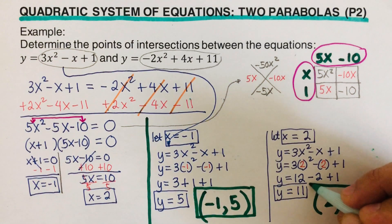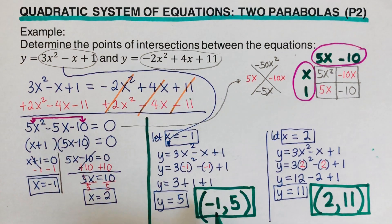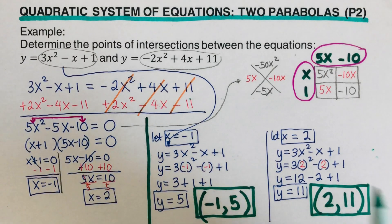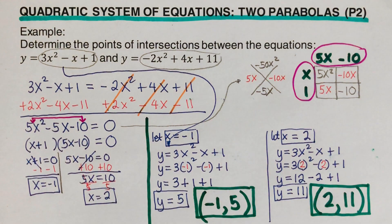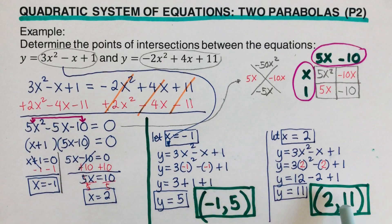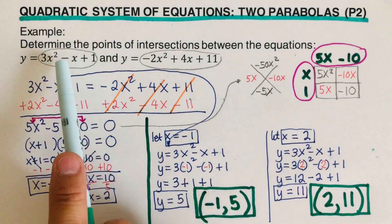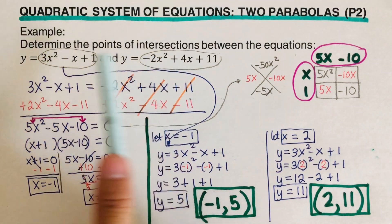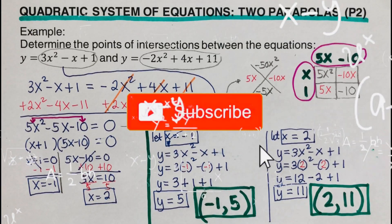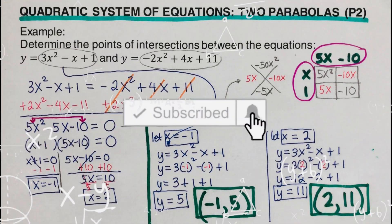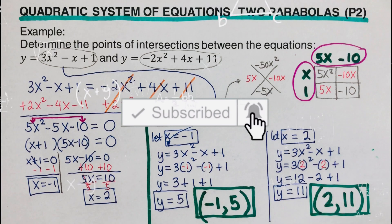So the two points of intersection — negative 1, 5 and 2, 11 — are the points of intersection between these two parabolas, and these are the solutions to the system of equations. That's it! If you find this video helpful, hit like and subscribe for more math videos. See ya!